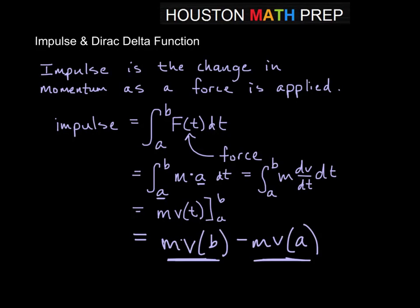When we talk about impulse, it's very possible that time A and time B are very, very close together. For example, when you're golfing and you hit a golf ball with a club, the impulse is applied over a very, very small amount of time. So often we look at A and B being very, very close together.